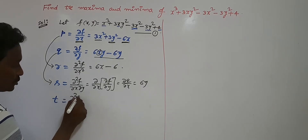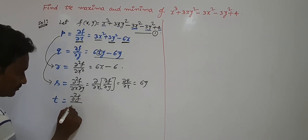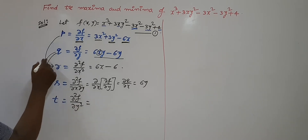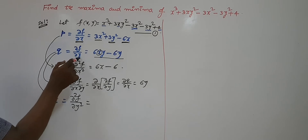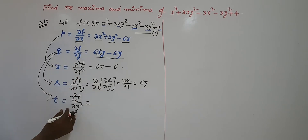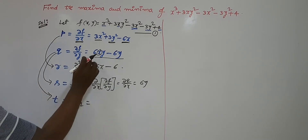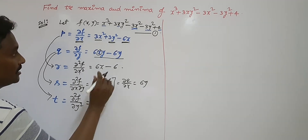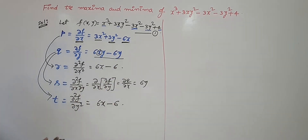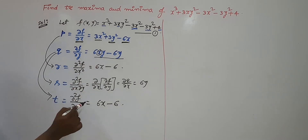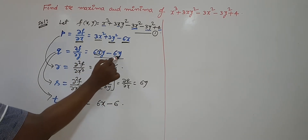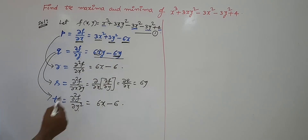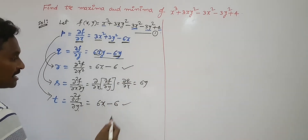Next, t = ∂²f/∂y². We already have q, the first order partial derivative of f with respect to y. For this, take the partial derivative of q with respect to y. We have 6xy and -6y. Partial derivative of 6xy with respect to y is 6x. Partial derivative of -6y with respect to y is -6. So t = 6x - 6. Sometimes you may get r and t are the same.